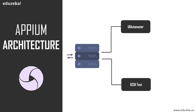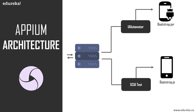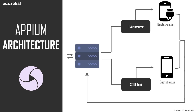Once the server has decided, by going through the desired capabilities arguments, whether it is an iOS or Android request, it processes it and sends it to two different files. For Android it is called the bootstrap.jar file, and for iOS it's the bootstrap.js file. The automation is done using bootstrap.js and bootstrap.jar on a simulator, emulator, or a real device. After the automation is done and the test results are out, they are sent back to the server, which sends them back as a server response to the client in the form of log files or test case results.